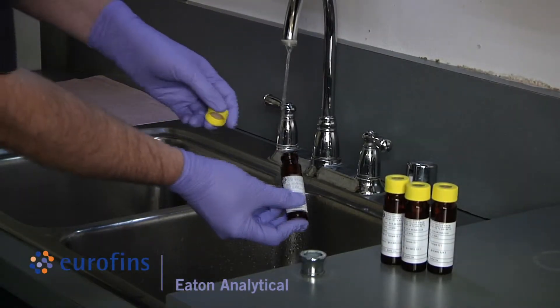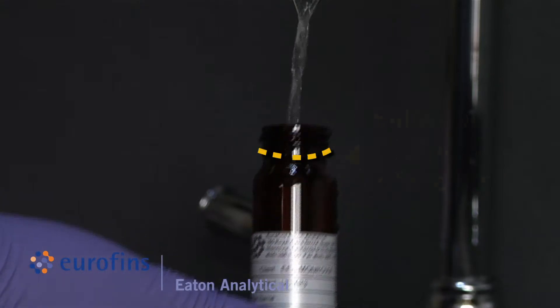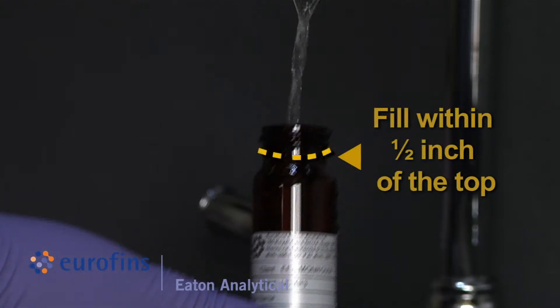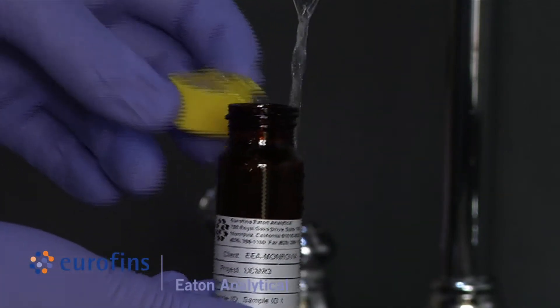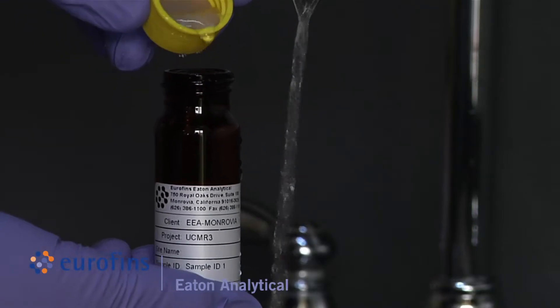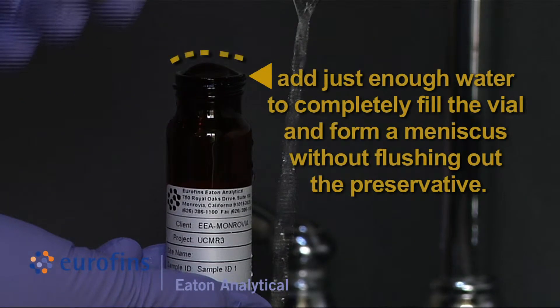Start sample collection by filling the vial to within half an inch of the top but not overflowing. Using the vial cap, add just enough water to completely fill the vial and form a meniscus without flushing out the preservative.